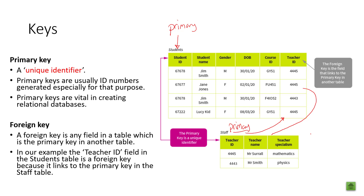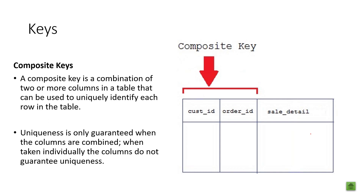Sometimes a primary key may not be obvious. You might have to combine two columns or two attributes together to create something that is truly unique — and when we do that we call it a composite key. This is a combination of two or more columns in a table used to uniquely identify each row. Uniqueness is only guaranteed when the columns are combined; individually they do not guarantee uniqueness.